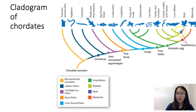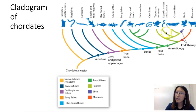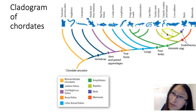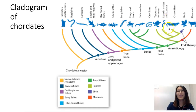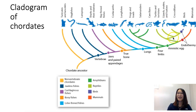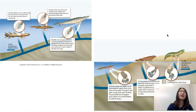Birds are most closely related to crocodiles on this cladogram. Birds, crocodiles, lizards, and snakes are all equally related to one another because they share a common ancestor right here. I hope that makes sense.